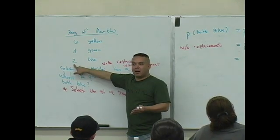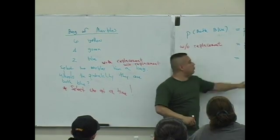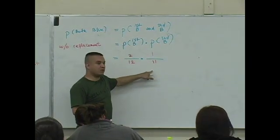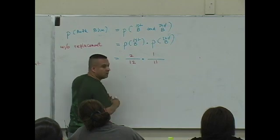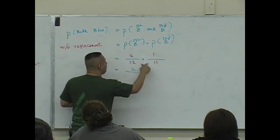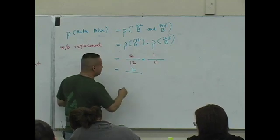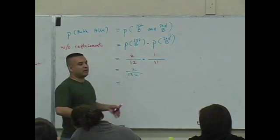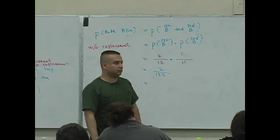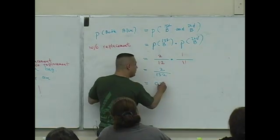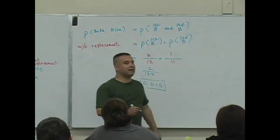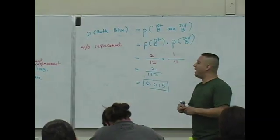Which means that out of the one less marbles — there's one blue left out of 11 marbles. Now, do you guys remember how to multiply fractions? You multiply across. So what's 2 times 1? 2. What's 12 times 11? 132. I can reduce this, or approximate to the nearest thousandth — you get 0.015. This is the probability that both marbles you select from that bag will be blue.